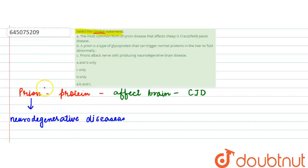So we understood about the prion. If we go back to our options and statements, we will analyze that statement one is wrong because it says the most common form of prion disease that affects sheep is Creutzfeldt-Jakob disease. It is wrong because at the place of sheep it should have been human.